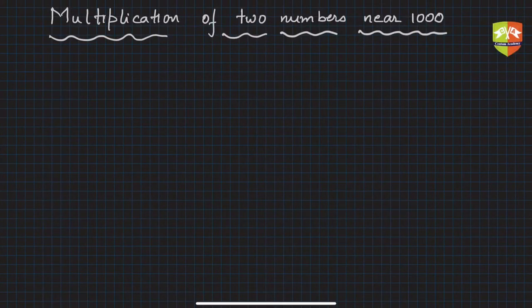Hello and welcome to another session on speed math. Last time we were doing multiplication of two numbers near thousand, and those two numbers were less than thousand. Now we are going to see case two, where both the numbers are greater than thousand.